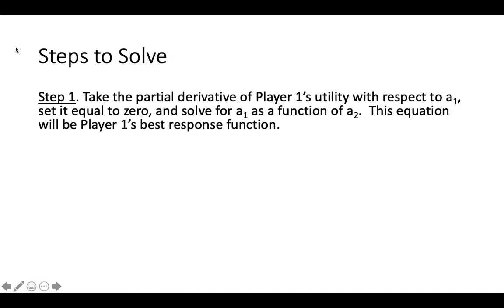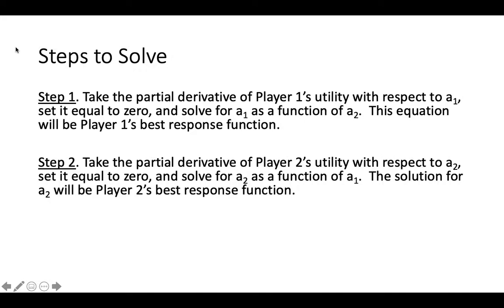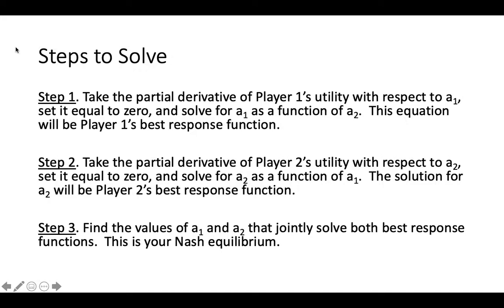With that background, we can proceed to the steps to solve the problem. First, take the partial derivative of Player 1's utility with respect to A1, set the resulting equation equal to 0, and solve for A1. Your solution will describe A1 as a function of A2 — you have just found Player 1's best response function. Then, we do the same thing for Player 2. Finally, we find the values of A1 and A2 that make both best response functions true simultaneously. This solution will be the Nash equilibrium of the game.